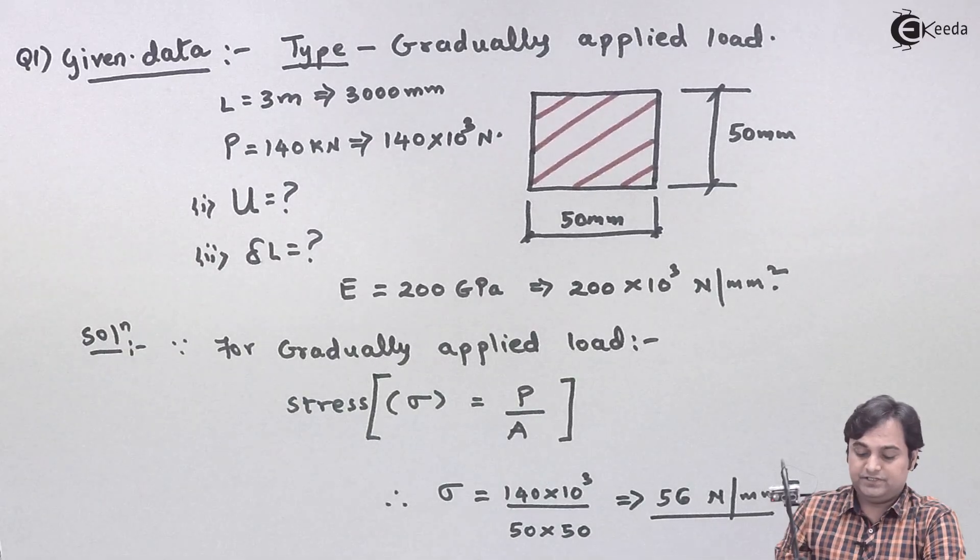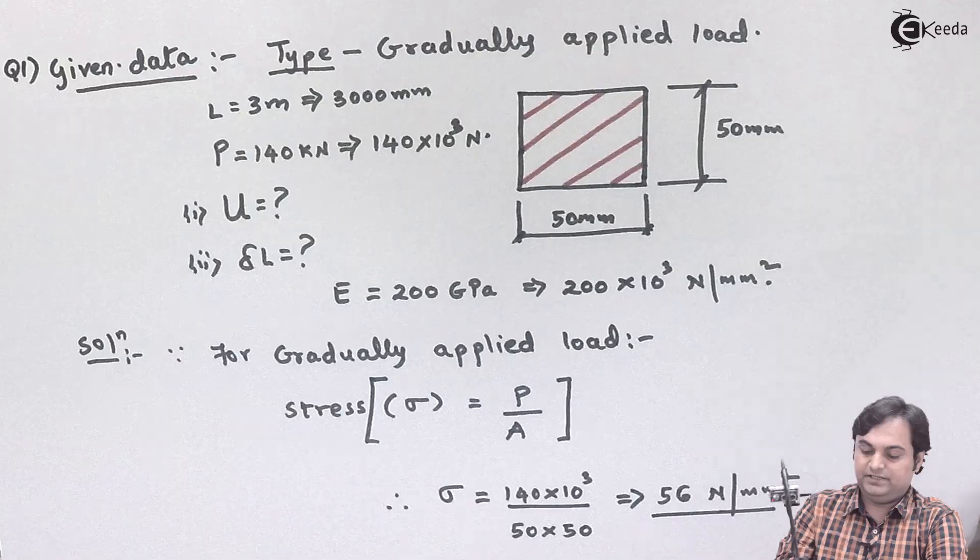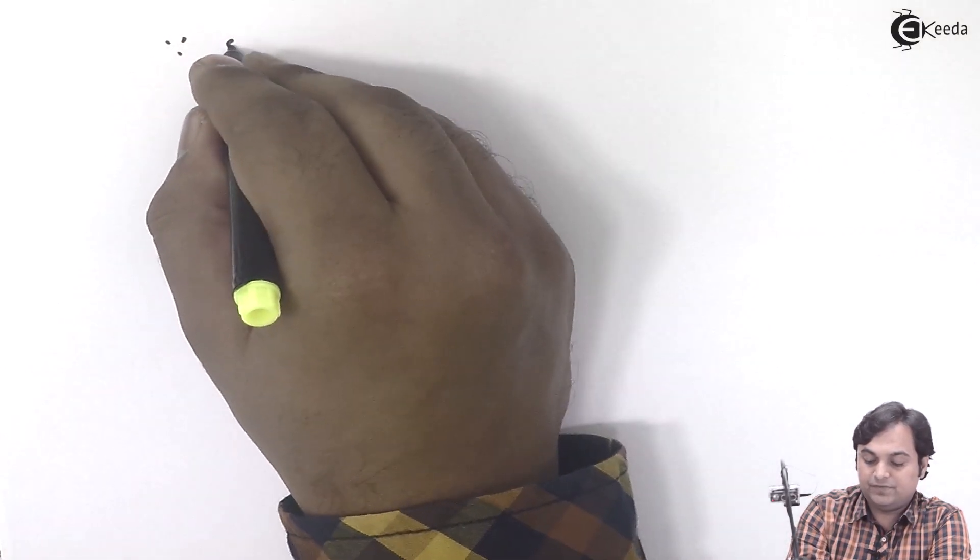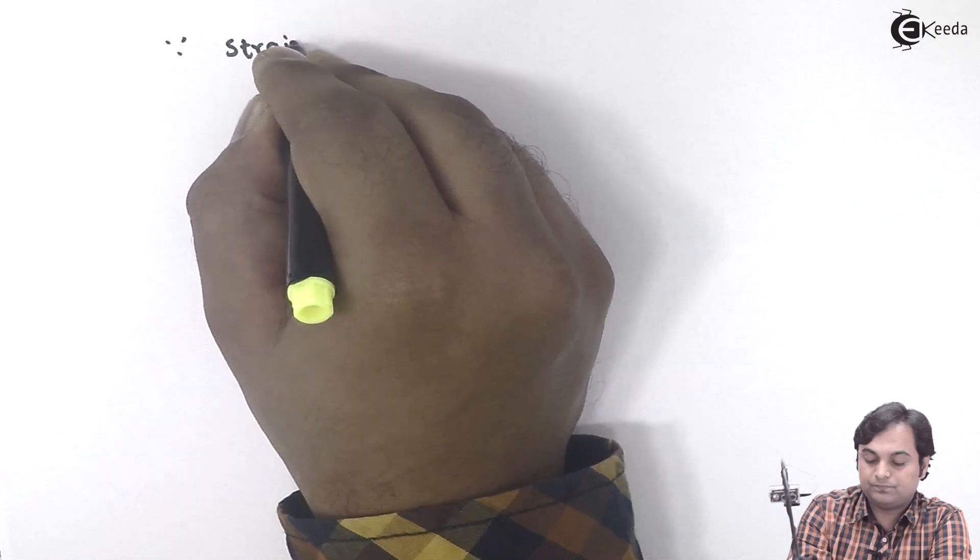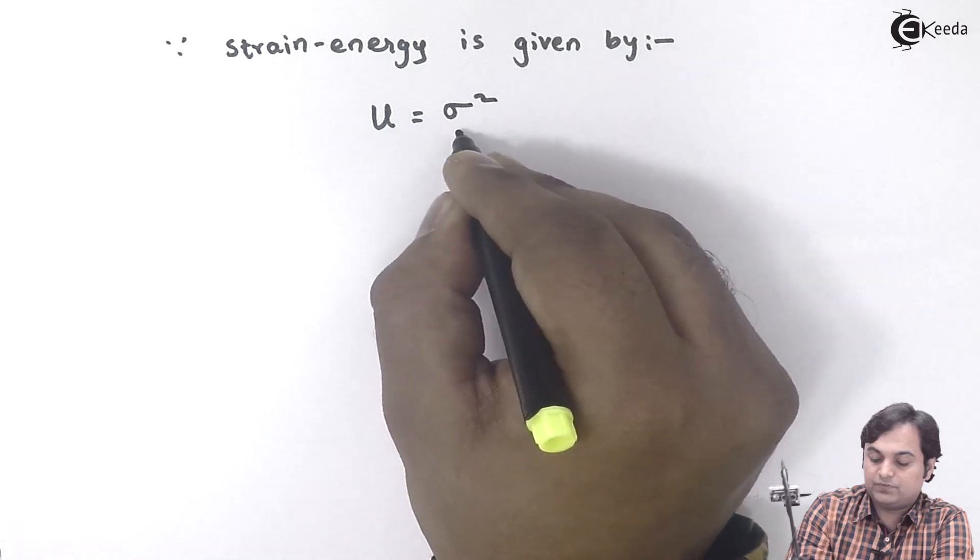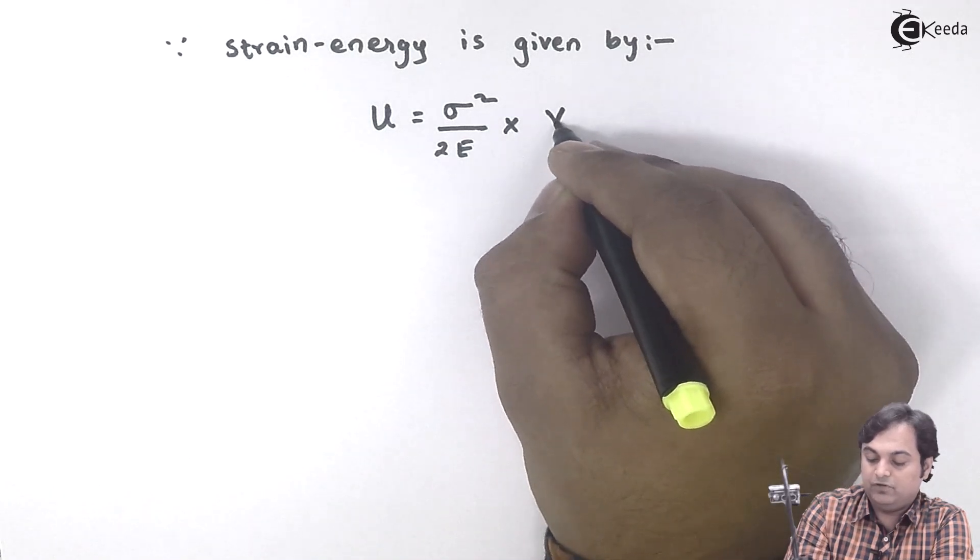After getting this value of stress, we can easily go for the calculation of strain energy. I will say that since strain energy is given by capital U is equal to sigma squared upon 2E multiplied by volume. This is the formula of strain energy.